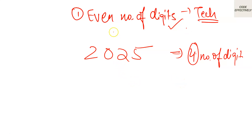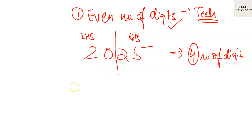The next condition is that we divide the number midway into two parts — a left-hand side and a right-hand side. We then define a variable sum and add those two parts together.